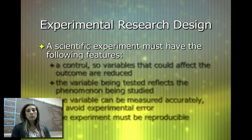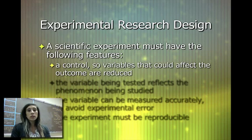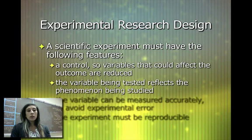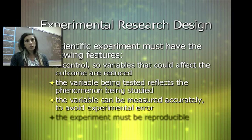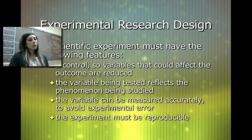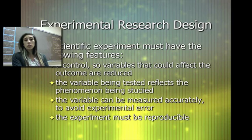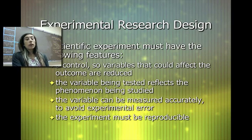With experimental research design, these experiments must have a control group — a group that doesn't have the variables given to it. There has to be a variable that's tested that reflects what you're studying, and a variable that can be measured accurately to avoid error. Most importantly, experiments have to be reproducible — that allows scientists to verify if the hypothesis is supported, disproved, or if this is something we can consider a theory. If you call up another scientist and ask them to do your experiment, it should be reproducible by someone else.